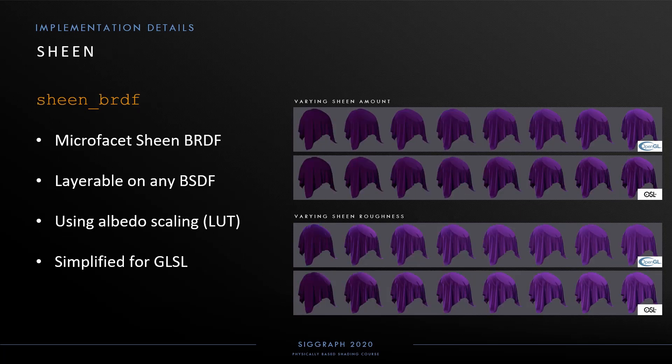Our sheen BRDF is based on the works by Imageworks, and is layerable as a specular backscattering response over any other BSDF. As with the dielectrics, this is done with albedo scaling using a lookup table, both for OSL and GLSL. For GLSL, we have additional simplifications: we ignore the geometry term and use a smoother denominator in the microfacet expression. More implementation details can be found in the course notes, including how we handle lighting in GLSL, and links to all source code are also included.